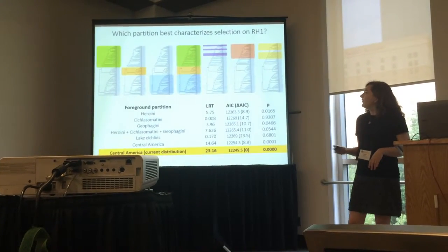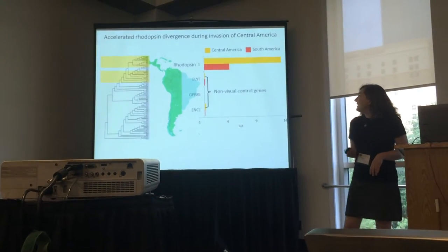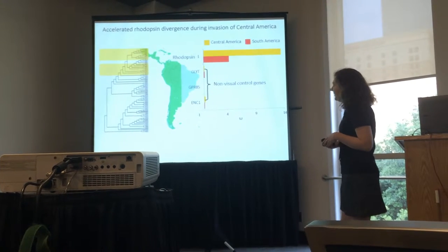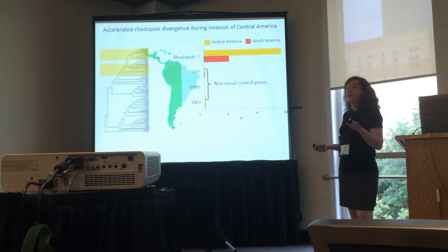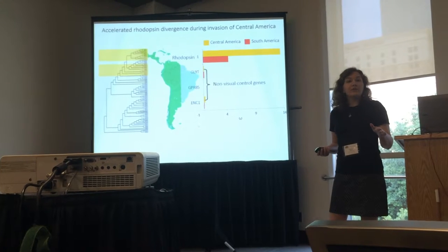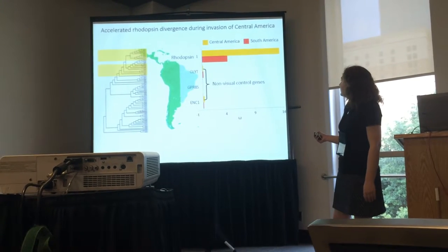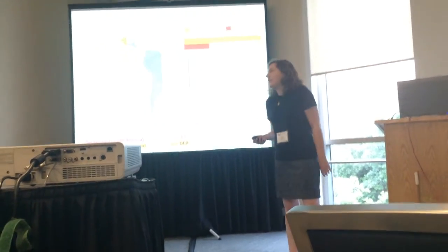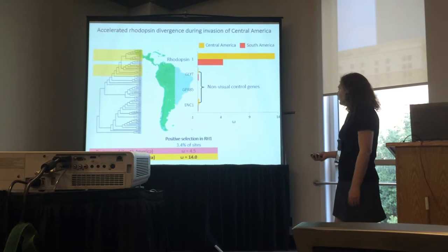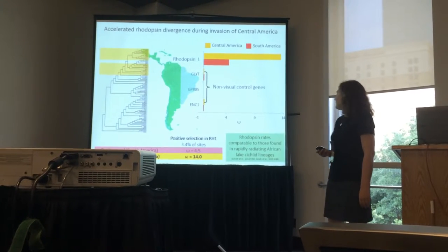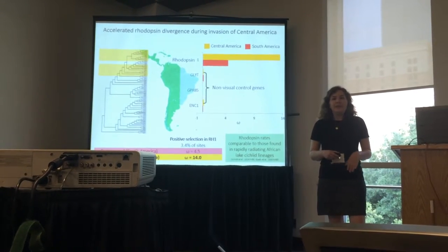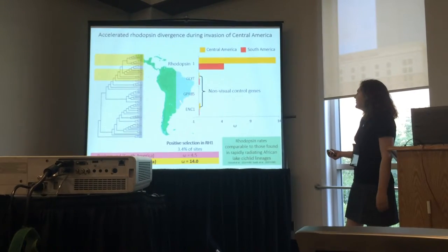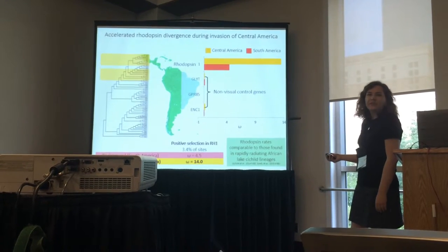When we look at this data more closely, what we see is accelerated rhodopsin divergence during the invasion of Central America. The South American cichlids are still undergoing positive selection to a certain extent, but Central America shows almost triple the level of positive selection. These rates are comparable to those found in rapidly radiating African lake cichlid lineages. When we compare against our non-visual control genes, we don't see this pattern.